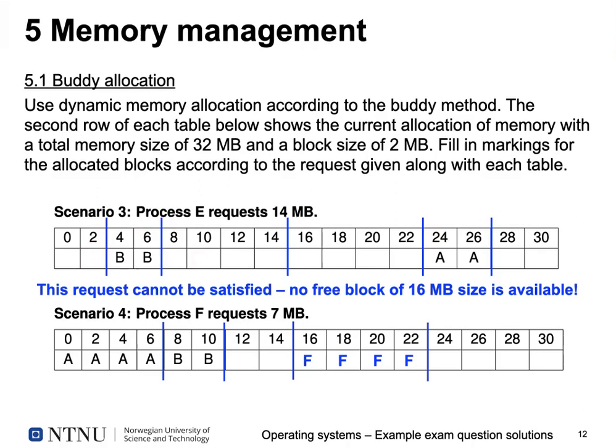Scenario four: process F requests 7 megabytes, requiring an 8-megabyte area. We split the second half into two 8-megabyte blocks and place F in the first one. Placing it in the second would also be feasible — usually you use the first one that fits, but both solutions would have been correct.